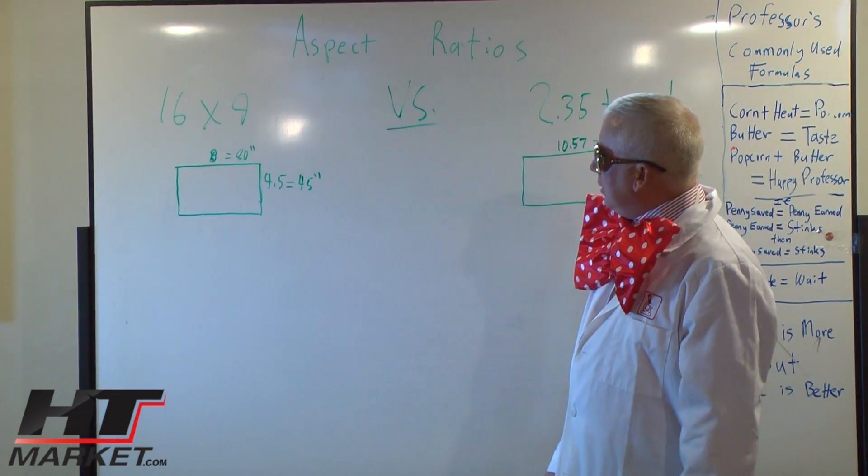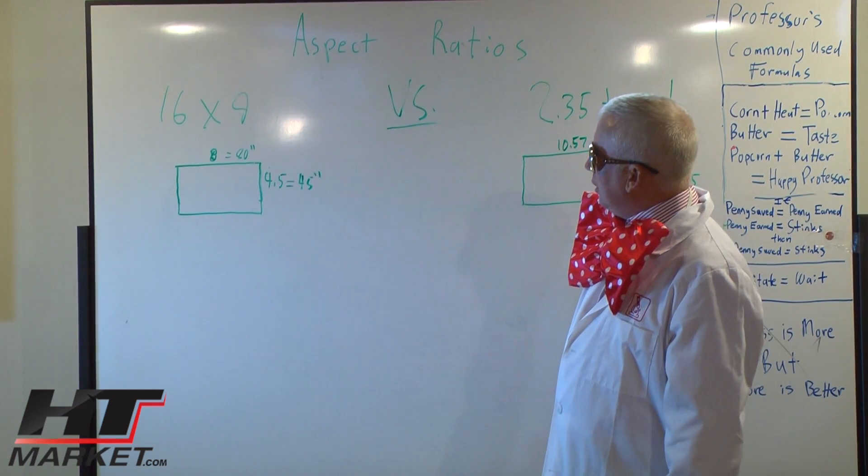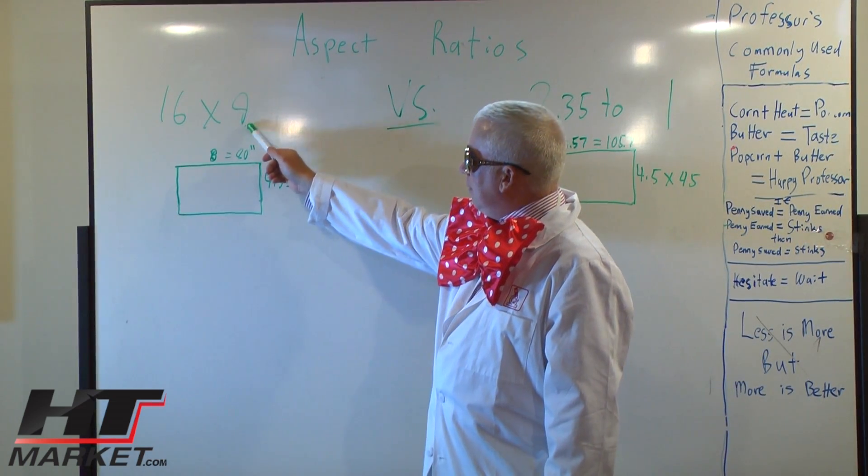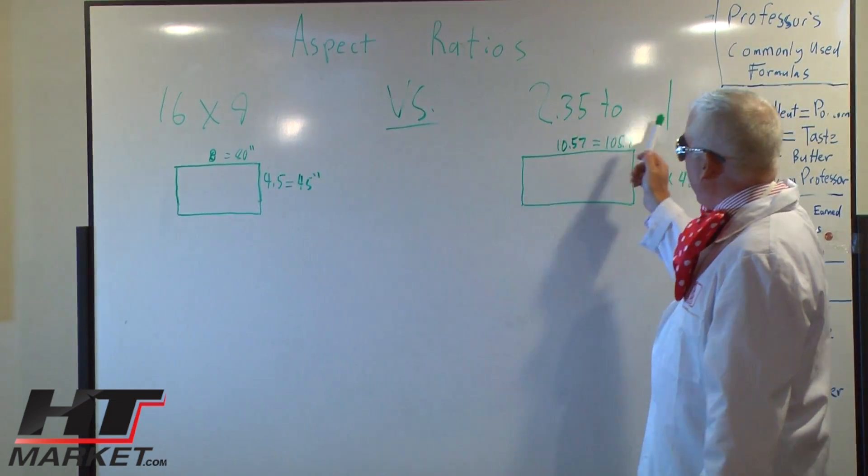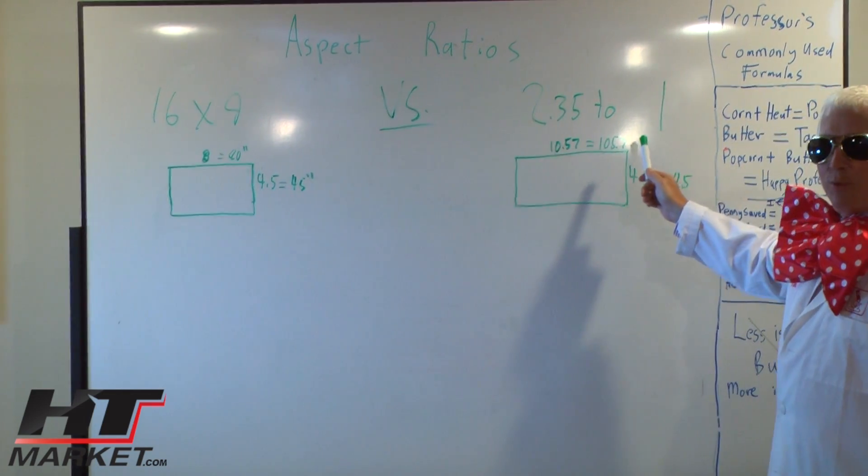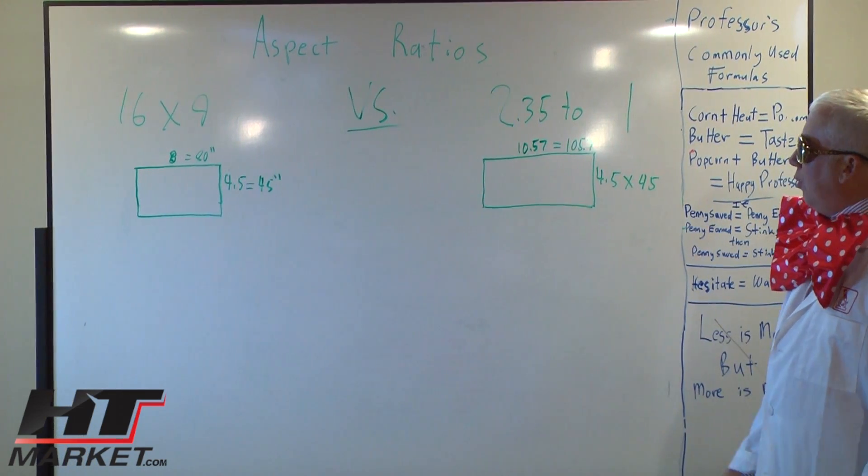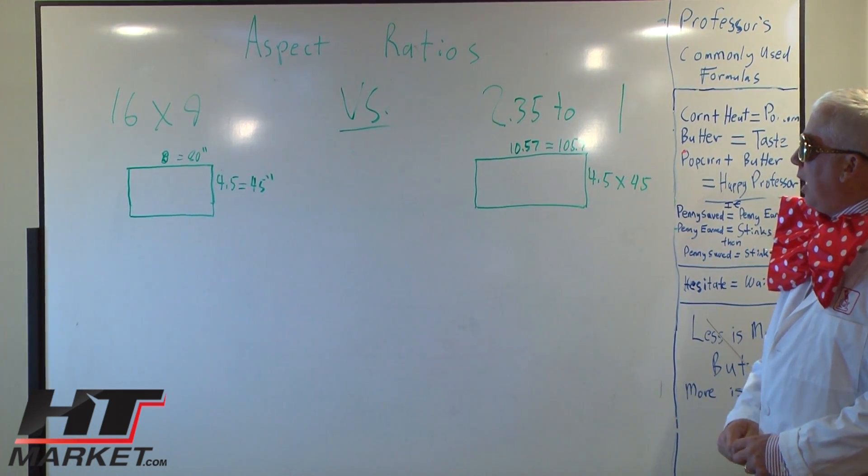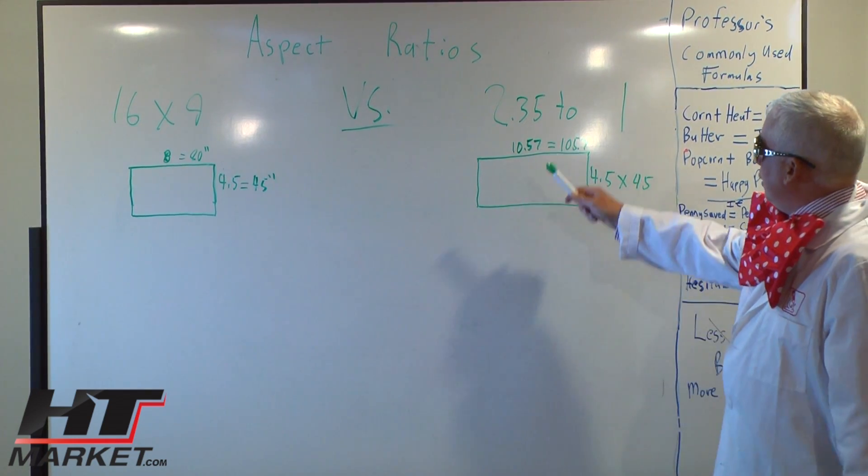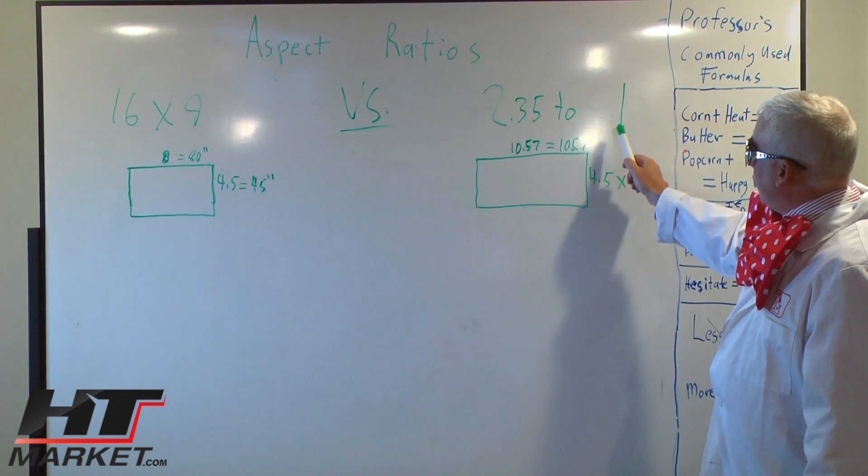Now many DVDs come in two different formats: the 16 by 9 and the 2.35 to 1 format which is called anamorphic DVD. So a lot of dedicated home theaters are now opting to put in the 2.35 to 1 aspect ratio.